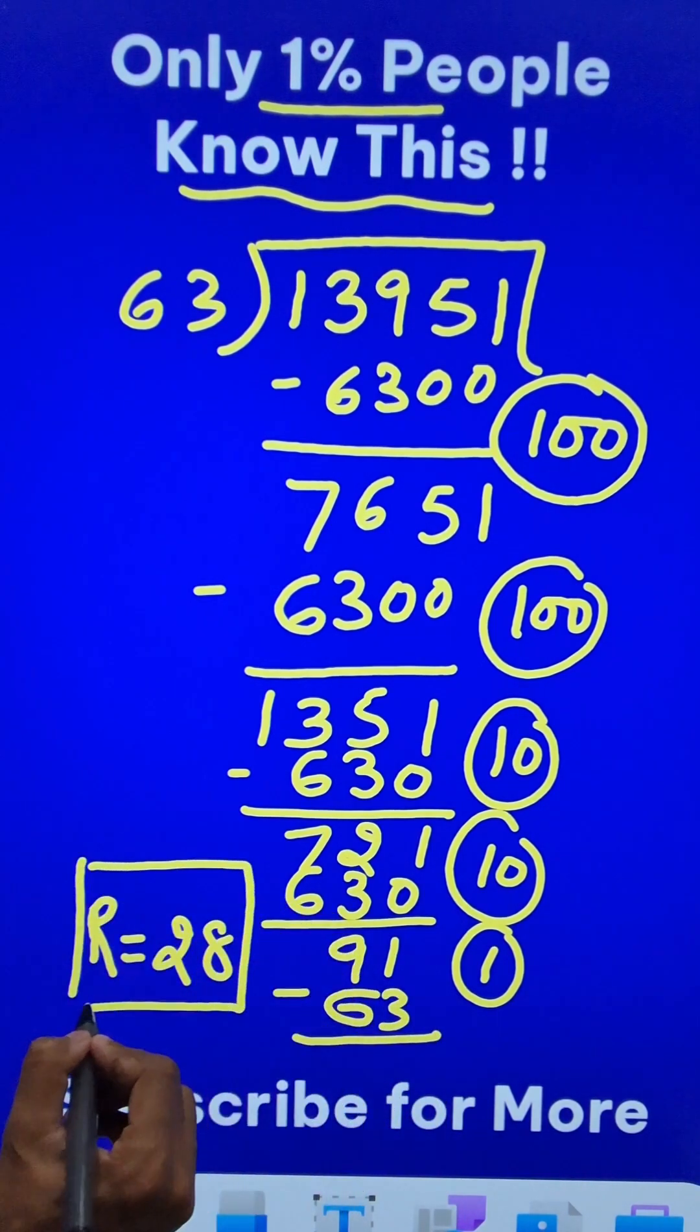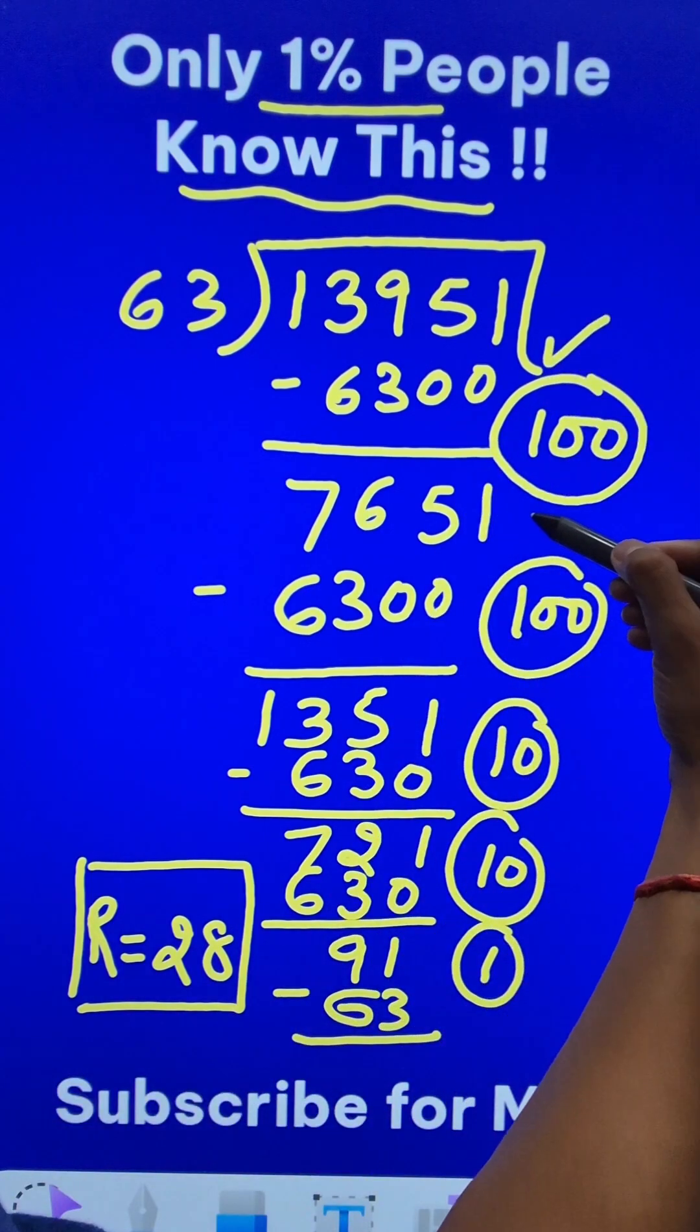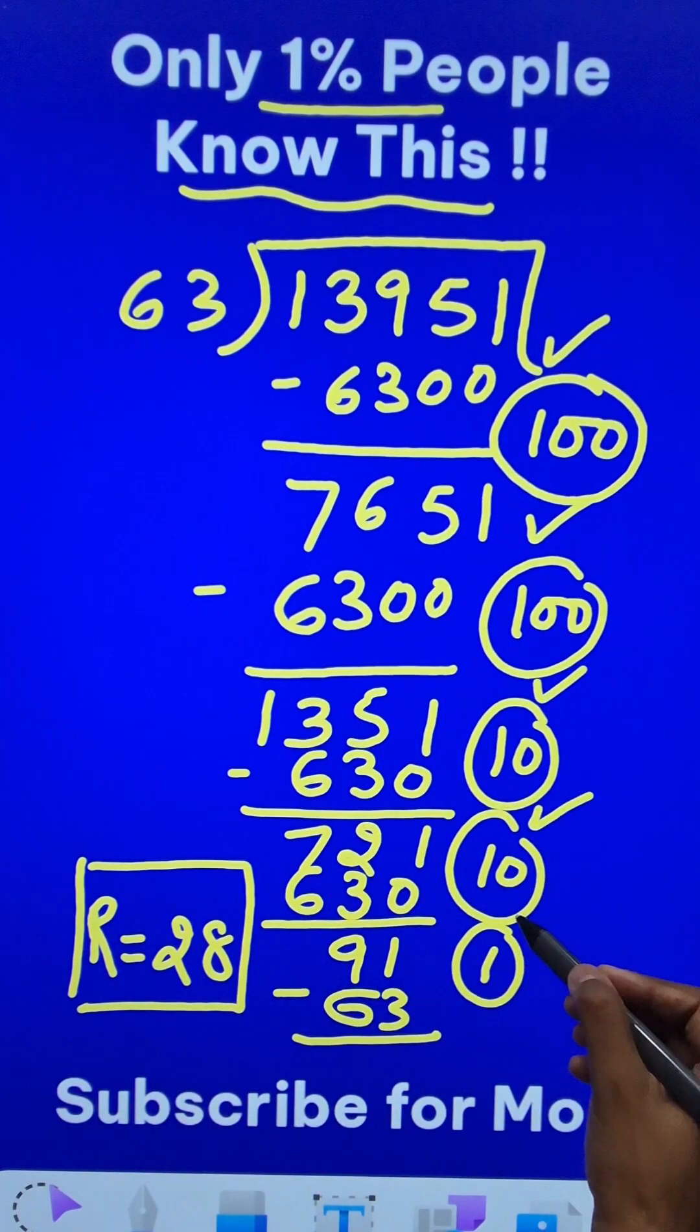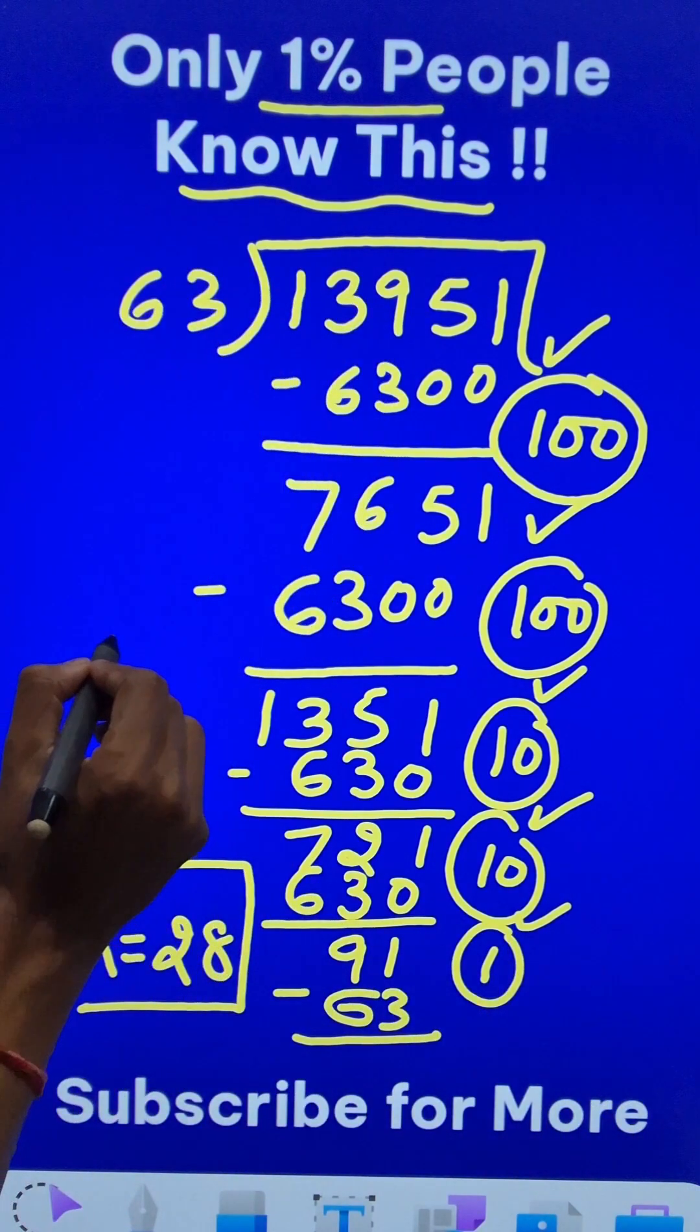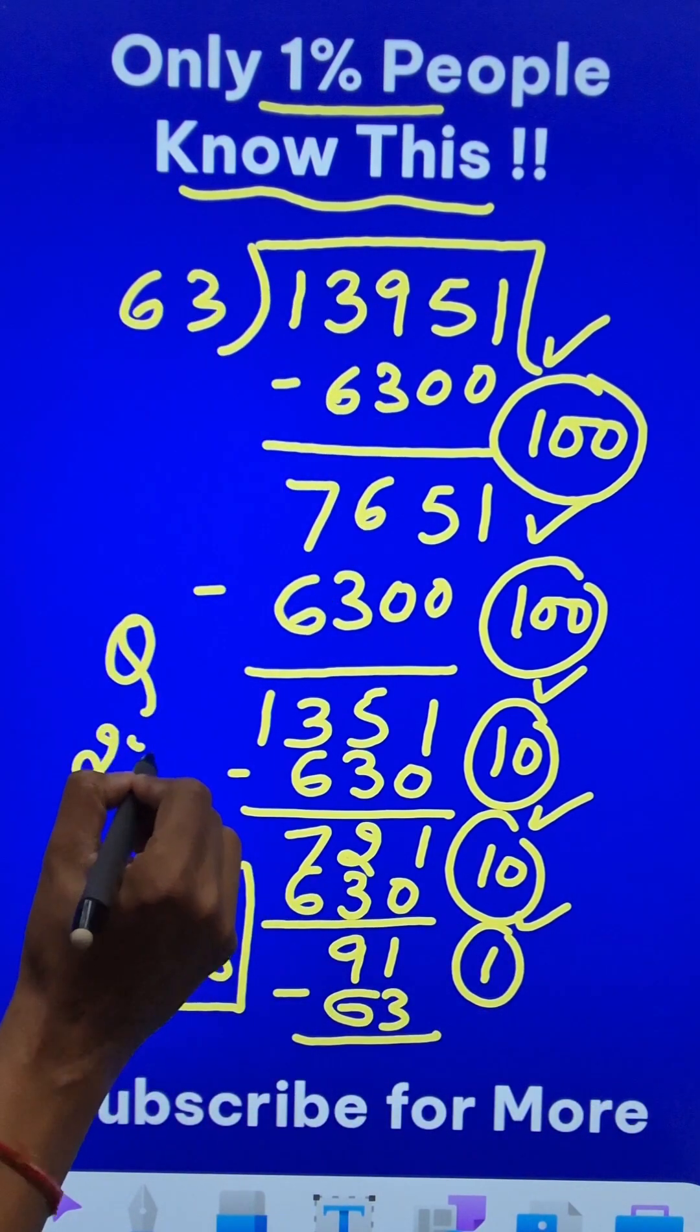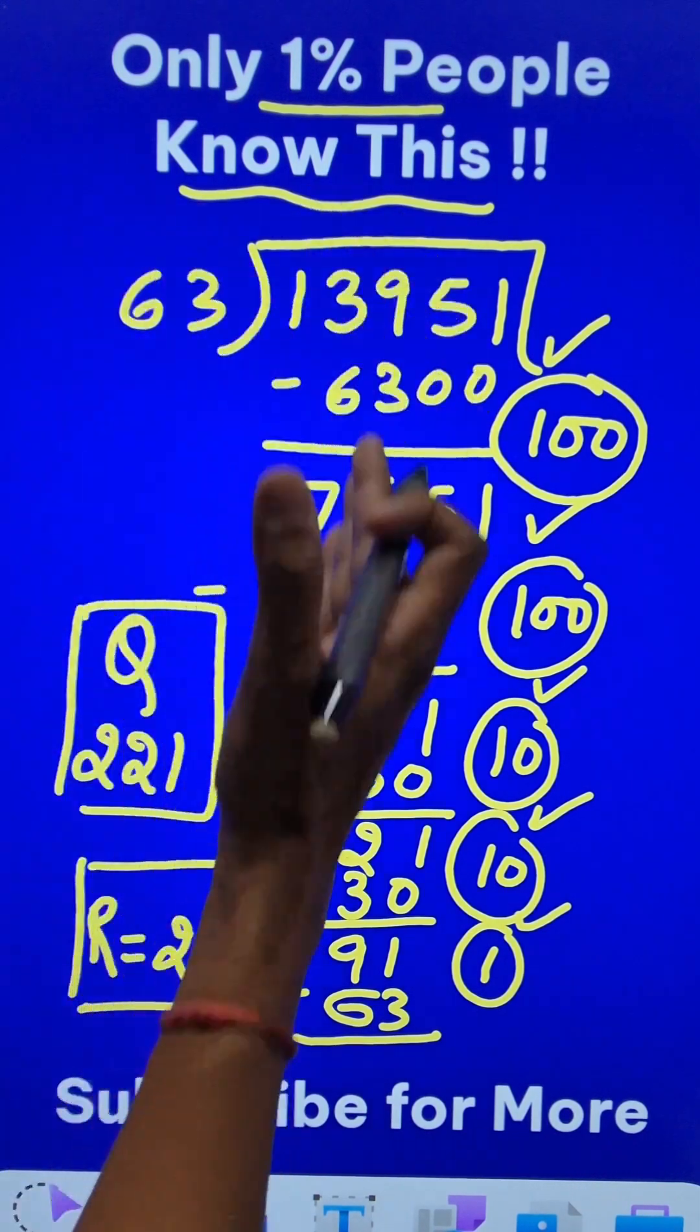What is the quotient? The remainder obviously is 28. Look at all these partial quotients: 100, 200, 210, 220, 221. So when you divide this number by 63, the quotient which will come out is 221 and the remainder is 28. You can check it using the traditional approach.